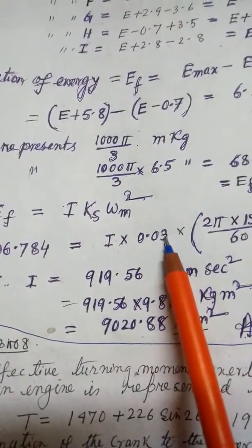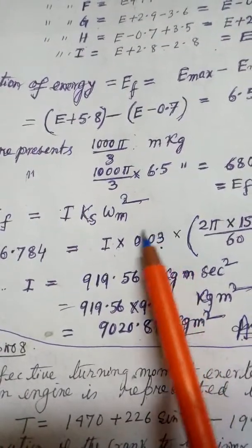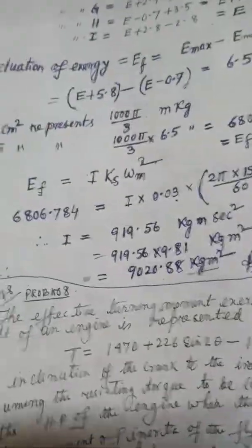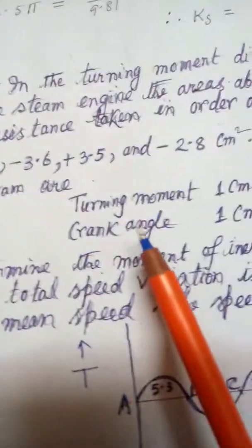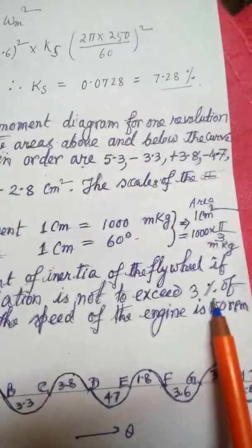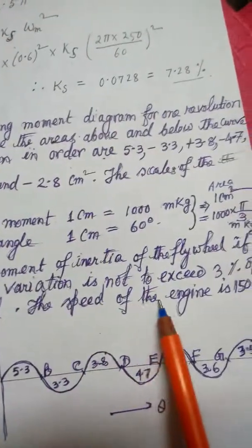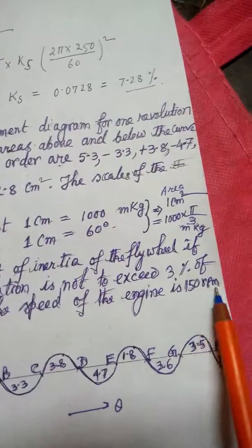Determine the moment of inertia of the flywheel if the total speed variation is not to exceed 3% of the mean speed. The speed of the engine is 150 rpm. So speed variation is already given as 3%.